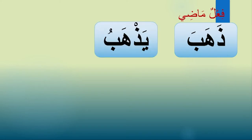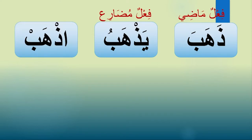ذهب is فعل ماضي — it means 'he went' in the past form. And the present form is يذهب, meaning 'he goes' or 'he is going' — it's فعل مضارع. And اذهب means 'go' in the command form — فعل أمر.